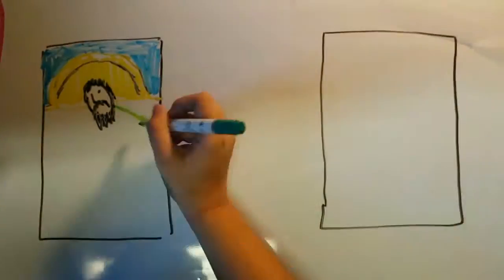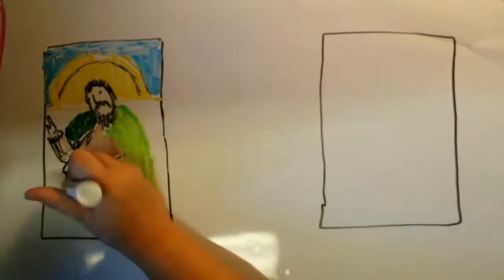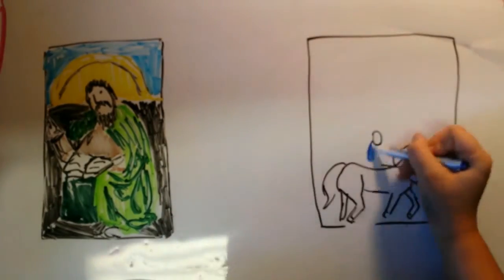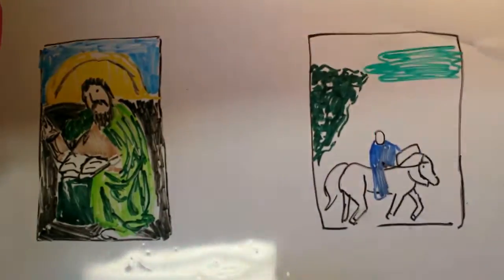Two panels, the Just Judges and St. John the Baptist, were stolen in 1934. While the St. John the Baptist panel has since been returned, the Just Judges is still missing to this day.